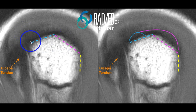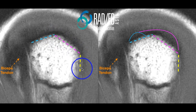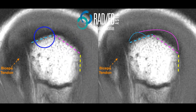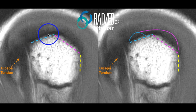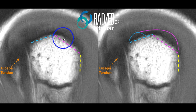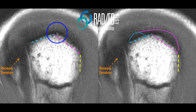We have three facets to the greater tuberosity. This is the horizontal or superior facet — supraspinatus attaches here. This is the oblique facet, and infraspinatus attaches to the entirety of this oblique facet.